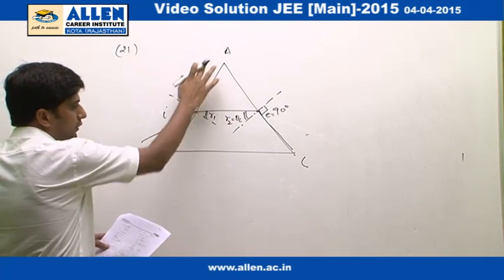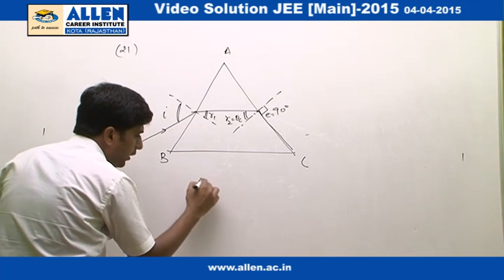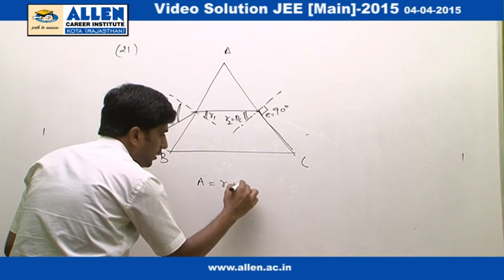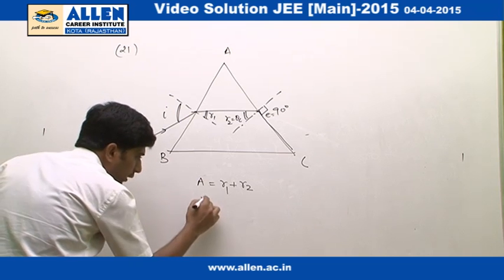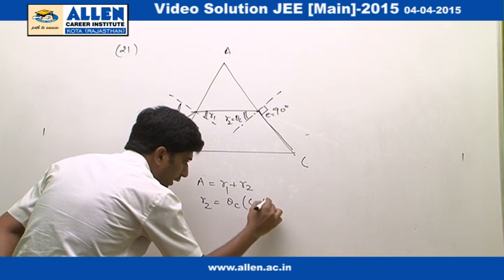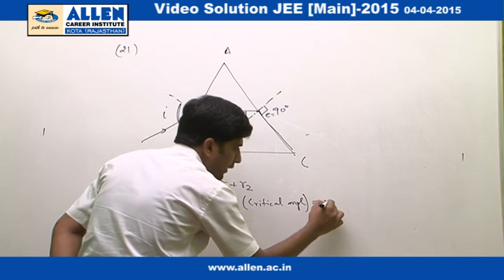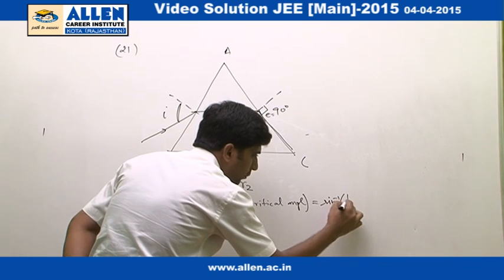According to the trigonometry, A equals to r1 plus r2, and r2 is theta c. Theta c is critical angle which is equal to sine inverse 1 by mu.